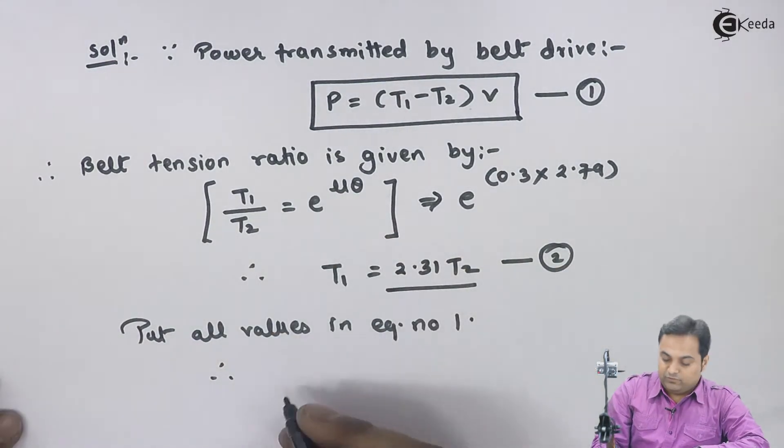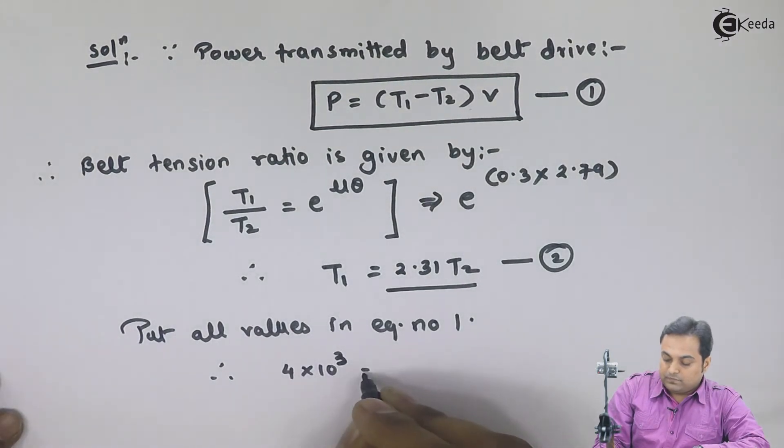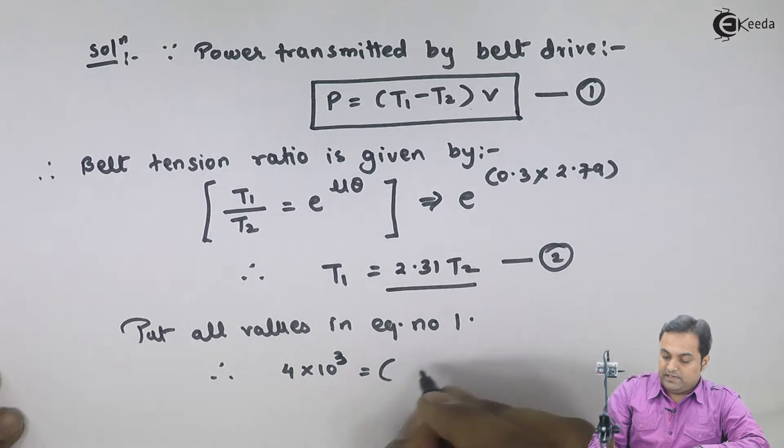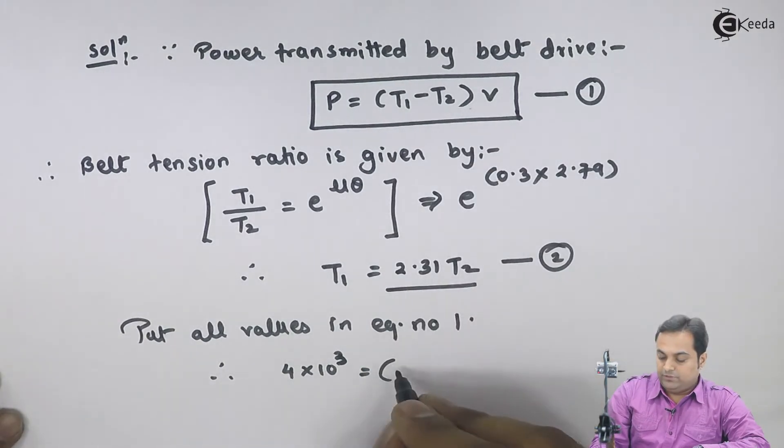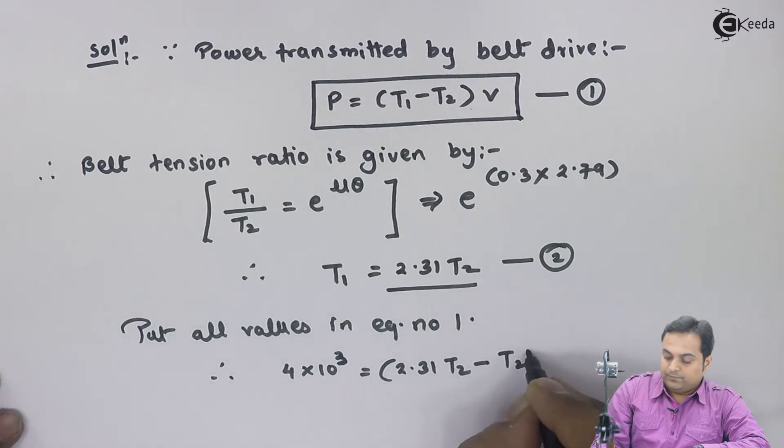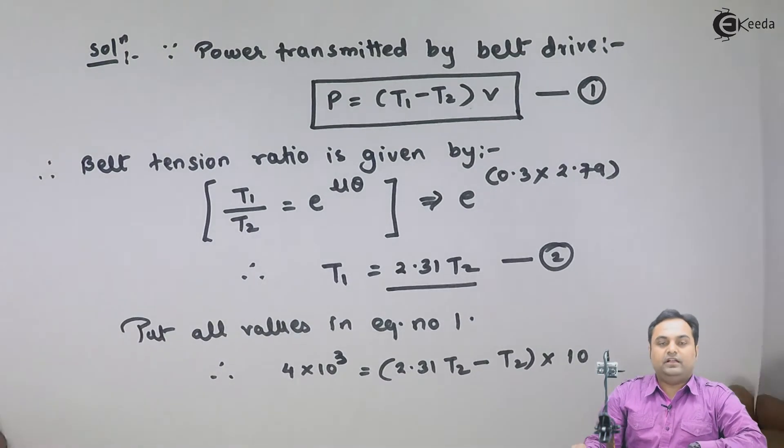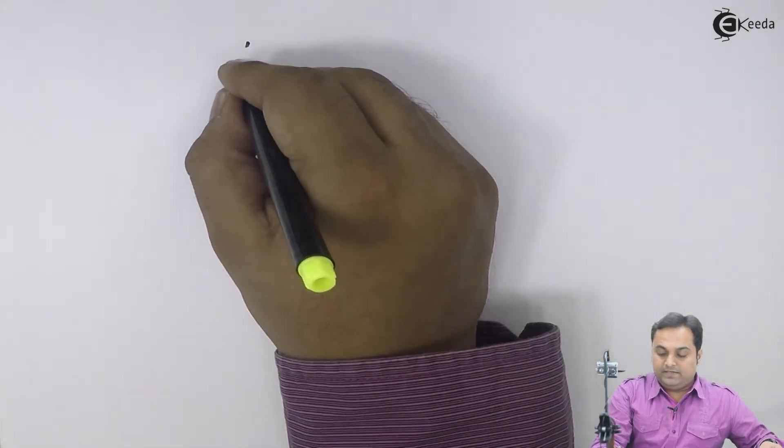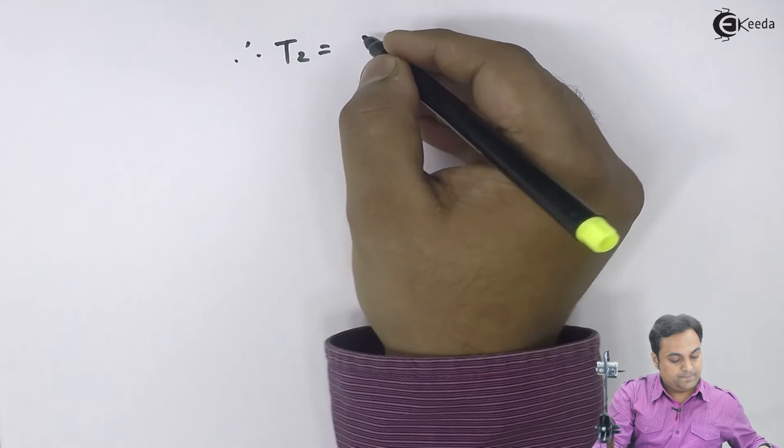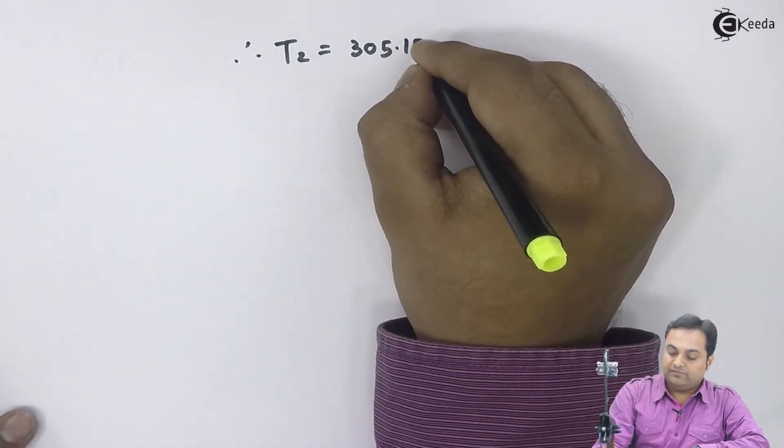Therefore, power it is given as 4 times 10 raised to 3. T1, I will write T1 in terms of T2 that is 2.31 T2 minus T2 into the velocity. Velocity is 10. From this if I calculate, I will get the answer of T2 as 305.15 Newtons.